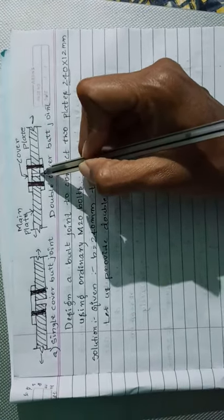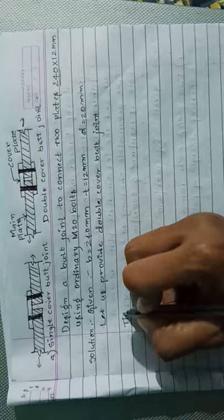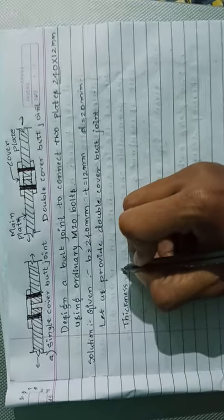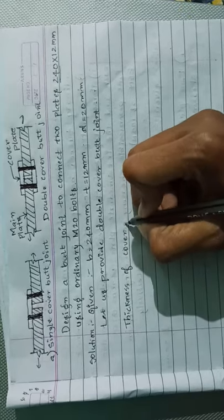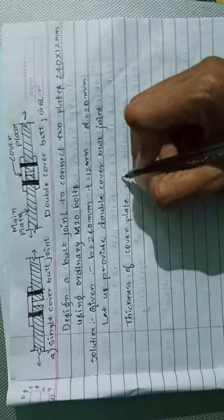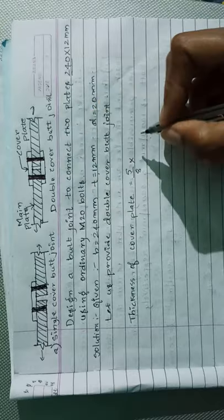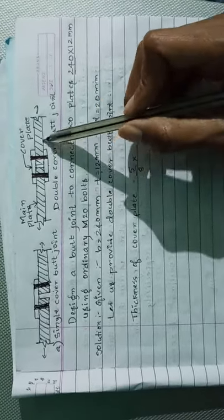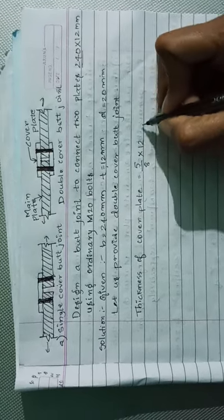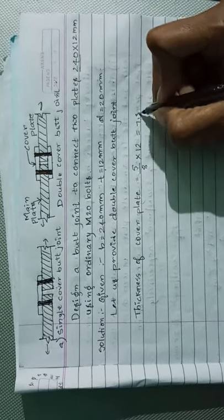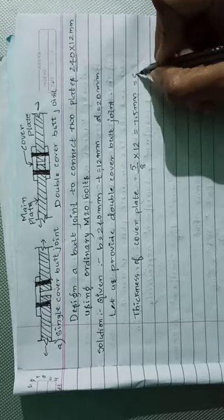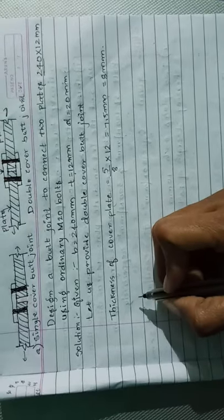First we have to design the thickness of the cover plate. That is 5/8 into the thickness of the plate, which is 12 mm, so that will be 7.5 mm, round off to 8 mm. Next is assuming the permissible stresses.